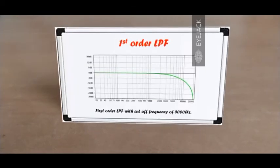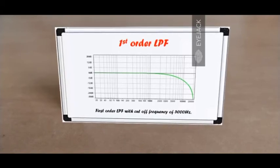This is the frequency response of a first order low-pass filter with a cutoff frequency of 5000 Hz. Notice how the curve is smooth, and this is because of the windowing function. In fact, it starts to curve even before the cutoff frequency of 5000 Hz.